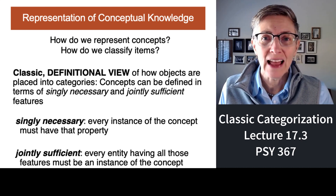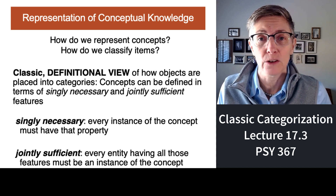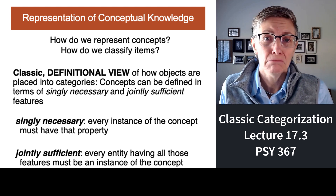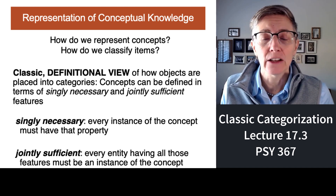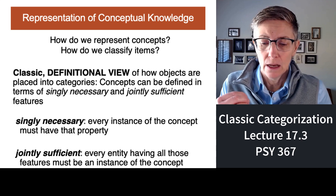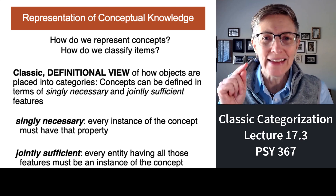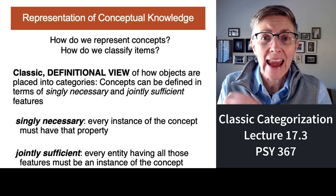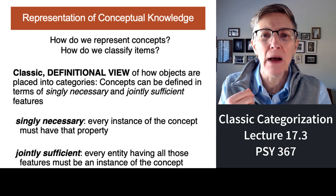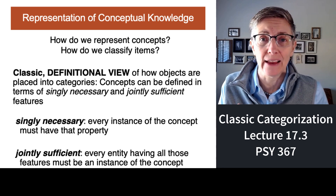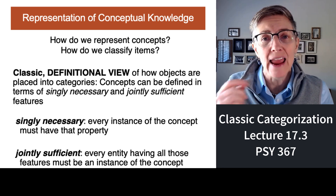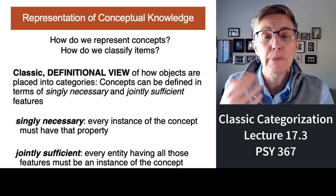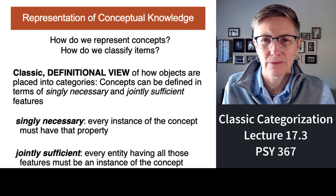In the classic or original view of categorization, what defined a category was based on a clear definition. That definition included things that were necessary — you had to have a particular thing to be a member of that category — and there were also things that combined would be sufficient to put you in that category. So every item in a category had all of a particular set of characteristics.